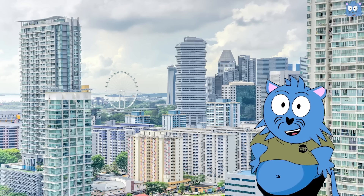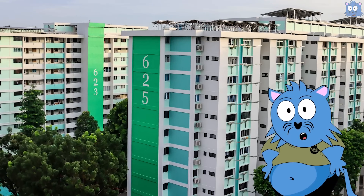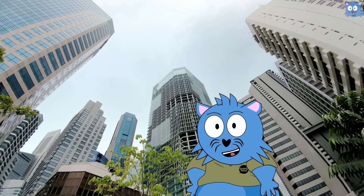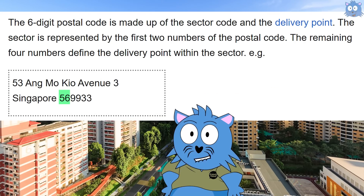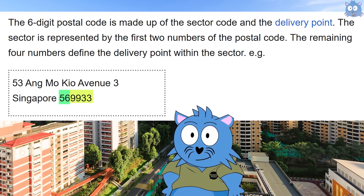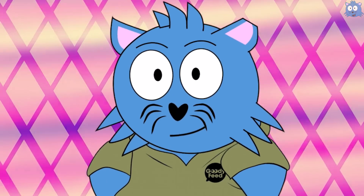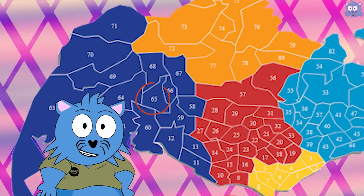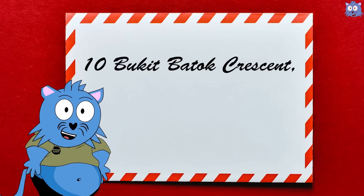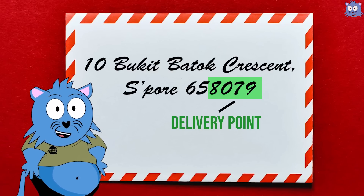Now you know the origins of the postal code — you should know what's next. In 1995, as Singapore became denser, we need to further divide the area. And this time, we're zooming all the way to each individual building — technically, to each delivery point, because each building is a delivery point. It's now a 6-digit code, with the first 2 digits being the postal sector number, and the last 4 digits as a delivery point. This means the district number no longer matters. For example, for our office building in Bukit Batok, the district is 23, but that doesn't matter. Our postal sector is 65. Our office building is 10 Bukit Batok Crescent. Since our postal code is 658079, our delivery point is 8079.